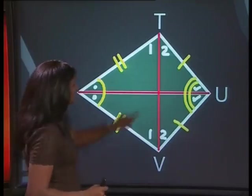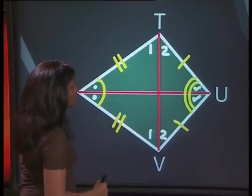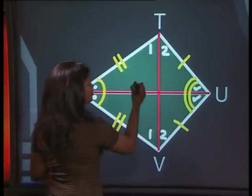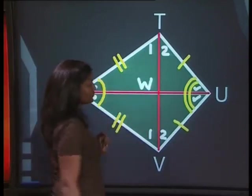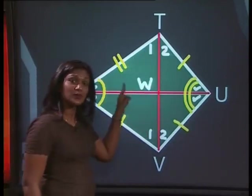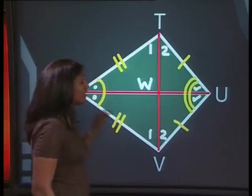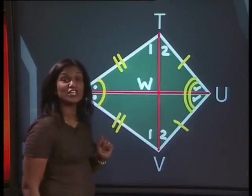Now, let's label this point W, that is where the diagonals intersect each other. What about the angles at W? Can we say that the lines are perpendicular to each other?